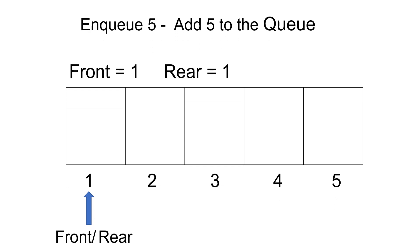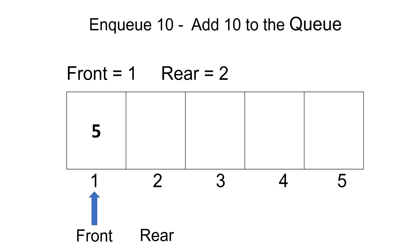When we add the first element, which is 5, to the queue, then front and rear both will point to index 1, which means that there is only one element present in the queue. To insert a new element to the queue, let's increment the rear pointer by 1, which will point to index 2, and then add the new element there.